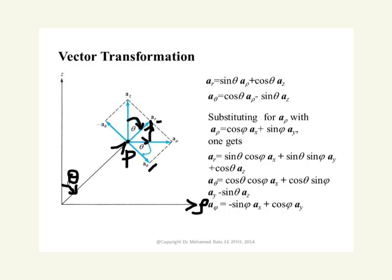We do the same for A_theta. We can see that the angle A_theta makes with A_rho is equal to theta as well. So A_theta has two components: cosine theta in the direction of A_rho, and a unit vector pointing downward in the minus z direction, which is sine theta AZ. By doing this, we are able to expand AR and A_theta in terms of A_rho and AZ.